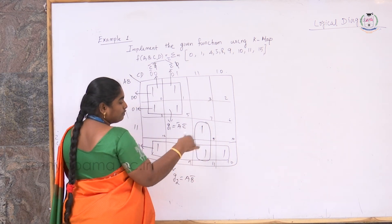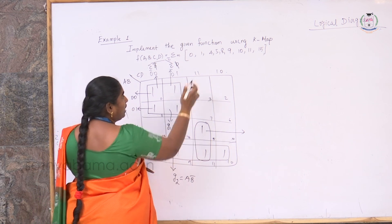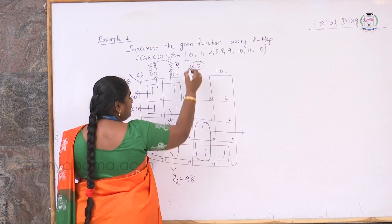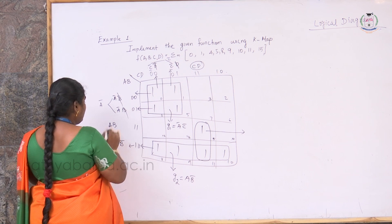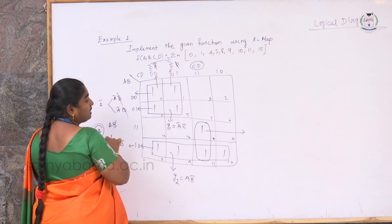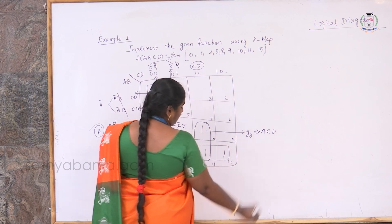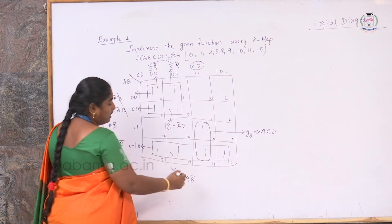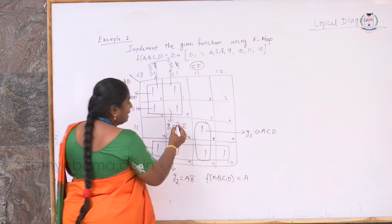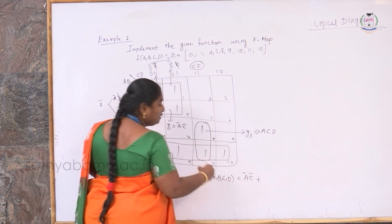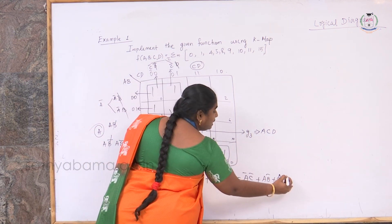Similarly, another 4 adjacent 1s can be mapped together. When all 4 columns are mapped, the 2 variables in the horizontal row complement and cancel each other, leaving only the terms 1 and 0. This gives the second group G2 represented as A B bar. The remaining 1 can be mapped with overlapping, giving group G3 as A C D.